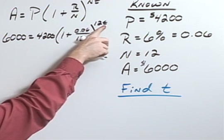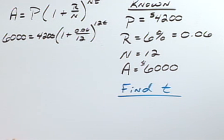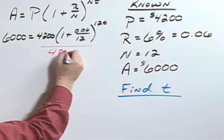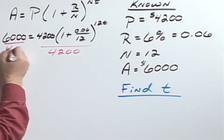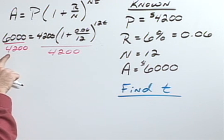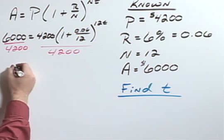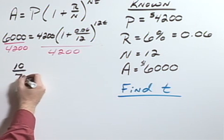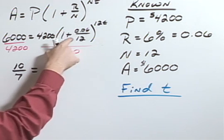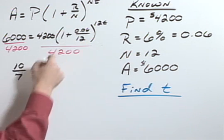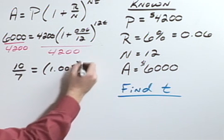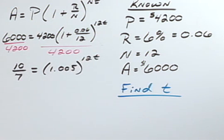Again, it's t that we're wanting to find here. Divide both sides by $4,200 and $6,000 divided by $4,200 reduces to 10 sevenths. So 10 sevenths equals 1 plus 0.06 over 12 or 1.005 to the 12t.